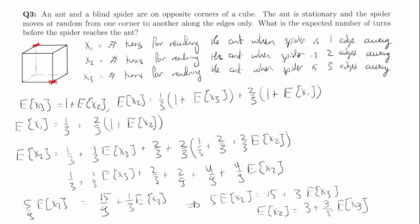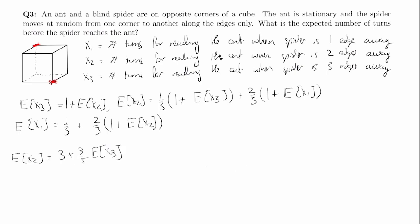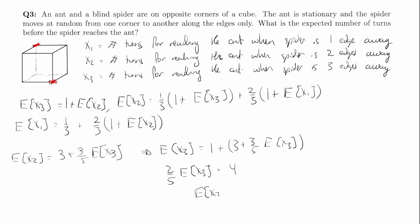Now we can plug E[x2] equals three plus three fifths E[x3] back into our original expression E[x3] equals one plus E[x2]. We get E[x3] equals one plus three plus three fifths E[x3]. Bringing the three fifths E[x3] to the left we get two fifths E[x3] equals four. Multiplying by five and dividing by two, E[x3] equals 10. So the expected number of turns the spider takes from the opposite corner is 10.